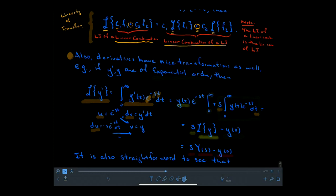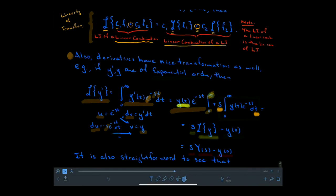Performing integration by parts, we get y(t) times e to the negative st evaluated from 0 to infinity, plus s times the integral of y times the decaying exponential — and since that s is a constant with respect to t, it factors out front. At the upper bound t goes to infinity: since y is of exponential order, the decaying exponential beats any growth and the upper bound term vanishes. At the lower bound t equals 0, e to the 0 is 1, leaving y(0).